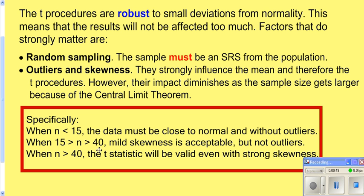Now, if it's between 15 and 40, it can be normal or have a little bit of skewness but no outliers, and you can still use it. So it all depends upon your sample size.